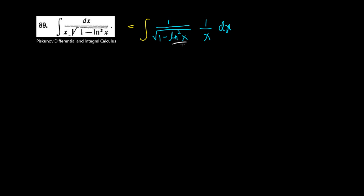Now I think this is a basic u substitution problem because we have the natural log of x and we have its derivative, which is 1 over x dx, sitting right beside it.